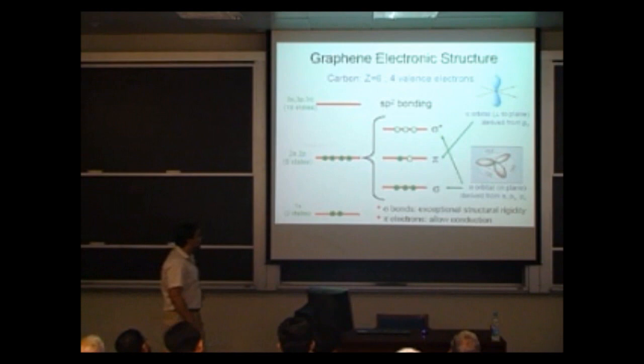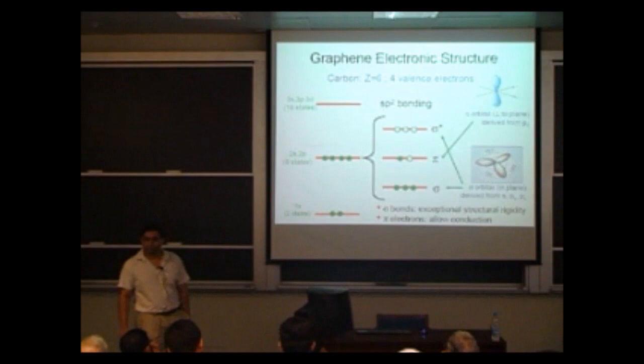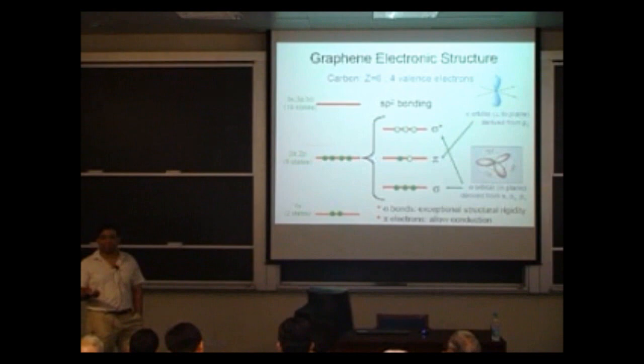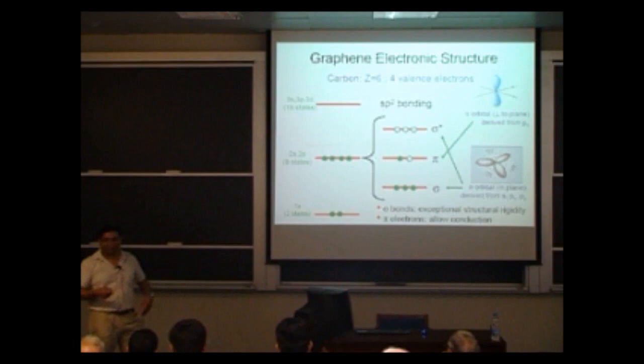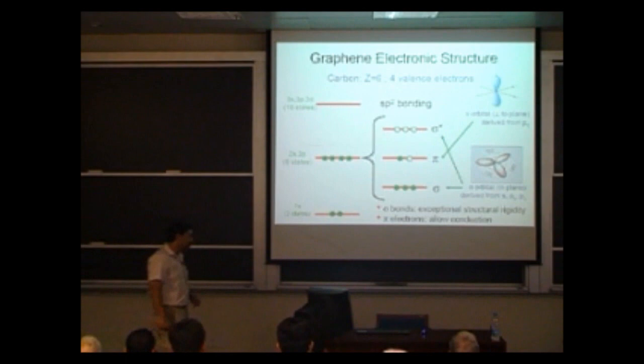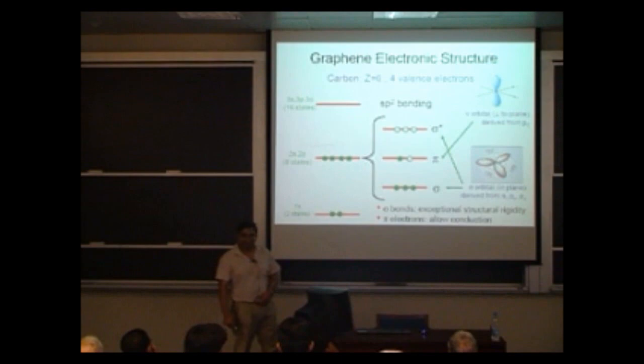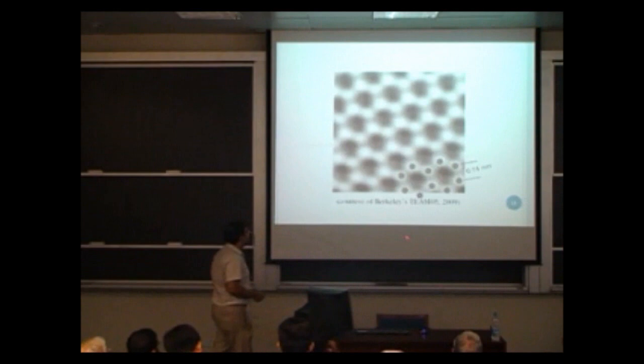A student asks: the pi electrons — are they p electrons? The speaker confirms: yes, more or less. They are more or less localized — not exactly around their own sites, but they have a finite probability of going to neighboring sites. The next thing to do is to use this knowledge to derive the dispersion relation for these pi electrons in the tight binding model. You will see the kind of approximations that we make to derive the dispersion relation, and that will give you a better idea of what these electrons are like.